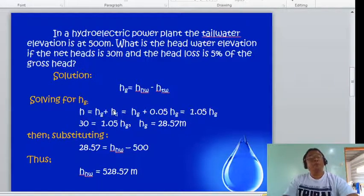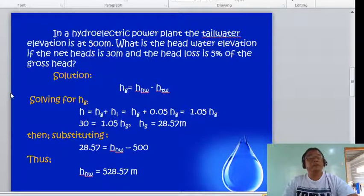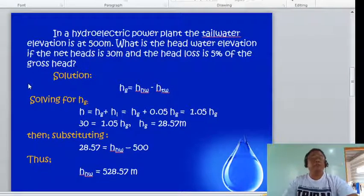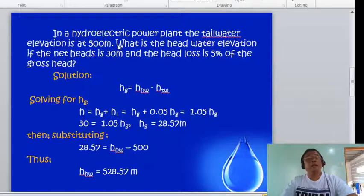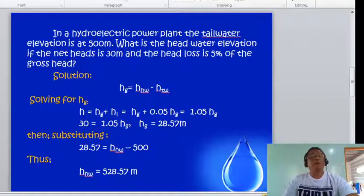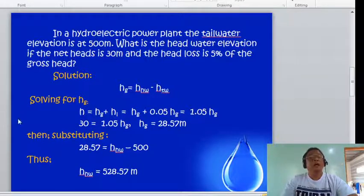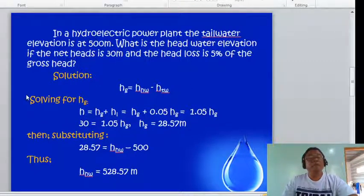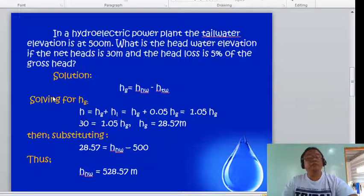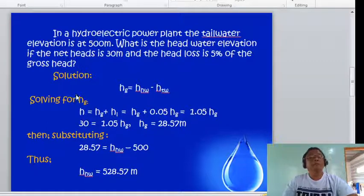Solving for the gross head: the net head equals the gross head minus the head loss. The net head equals hg minus 0.05 hg, which equals 1.05 hg. So 30 equals 1.05 hg. Therefore hg equals 28.57 meters.